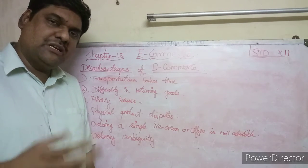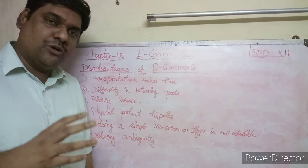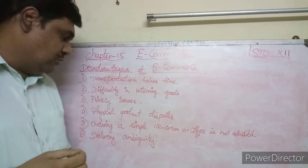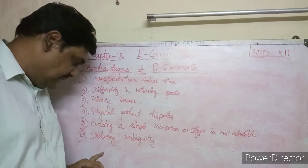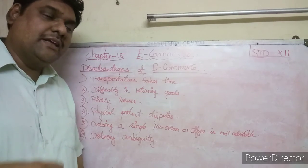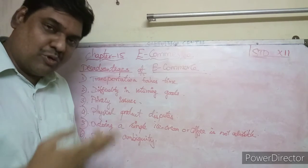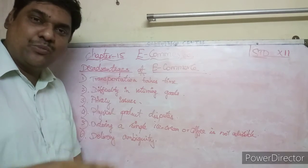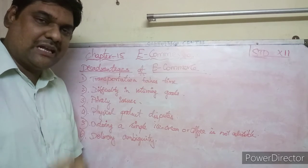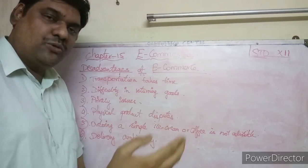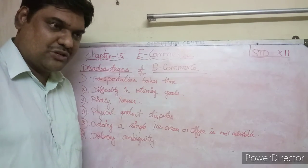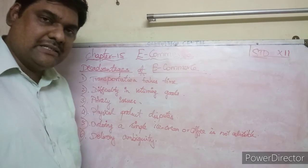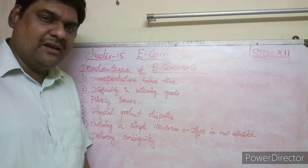The final disadvantage is delivery ambiguity. E-commerce websites say they will deliver in two days, but mostly they do not deliver on time. After the promised date, it may take two or three more days. For example, if you order a birthday gift expecting delivery in two days, it may arrive late. With this, we complete the chapter on traditional commerce and e-commerce. Thank you children.